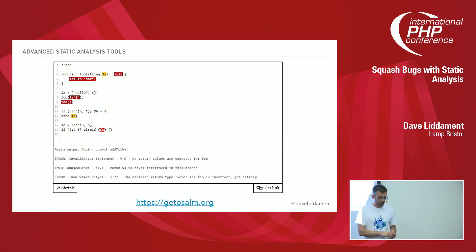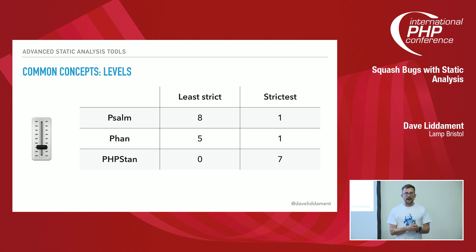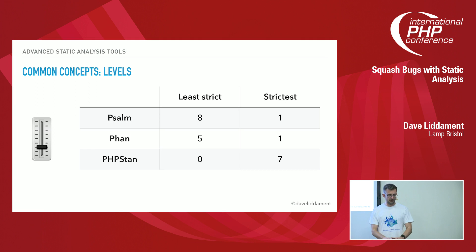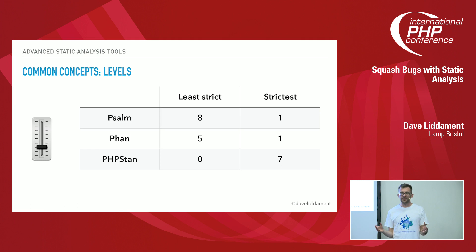There are some common concepts that all of these tools share. The first is they all have a concept of level — how strict they are in their analysis of the code. They all have a very low level of strictness, and as the strictness levels increase, you're adding in more and more checks. The reason for this is so that if you've got some terrible legacy code base, you put it on the least strict level first, clear up those bugs, and then slowly raise the level as your code quality goes up.